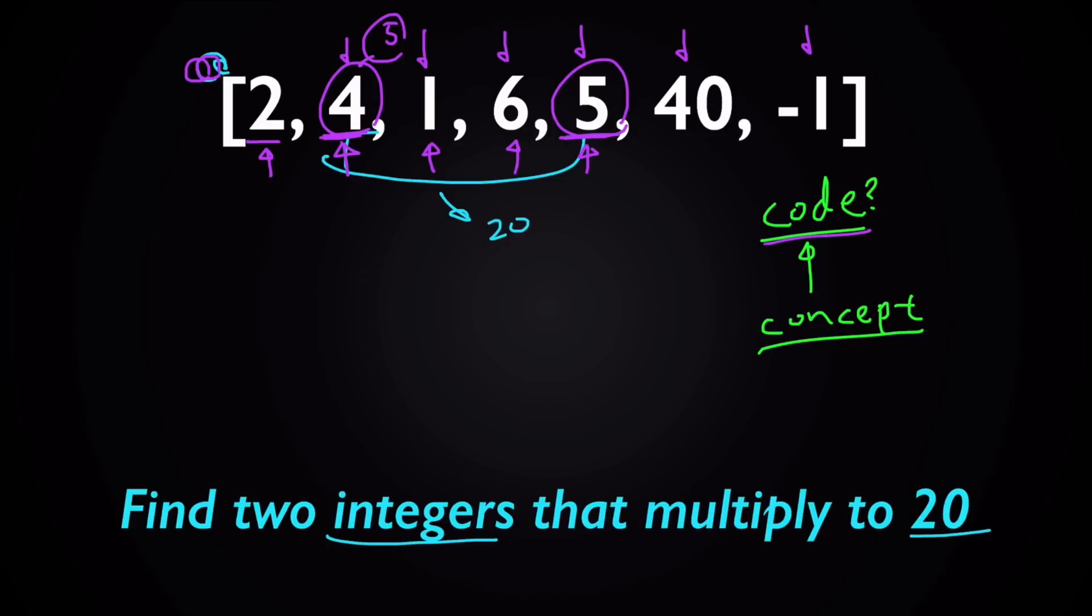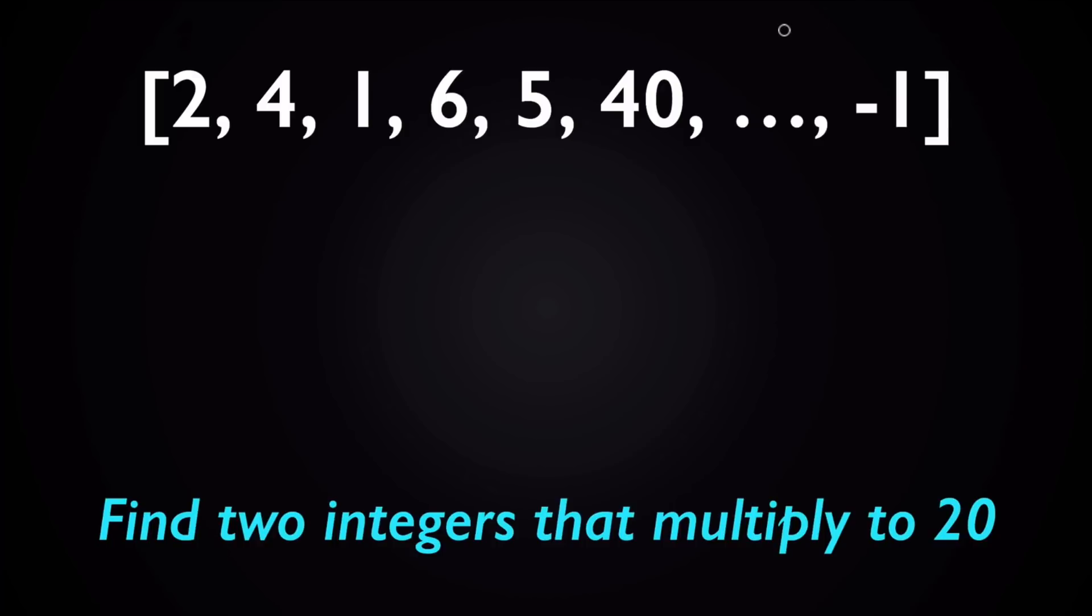You might also ask yourself, what if you had an array which is much longer than this one? You might have, for example, 1,000 items in this array. Then the previous solution of checking every potential pair of numbers to see if they multiply to 20 would be a lot of work.